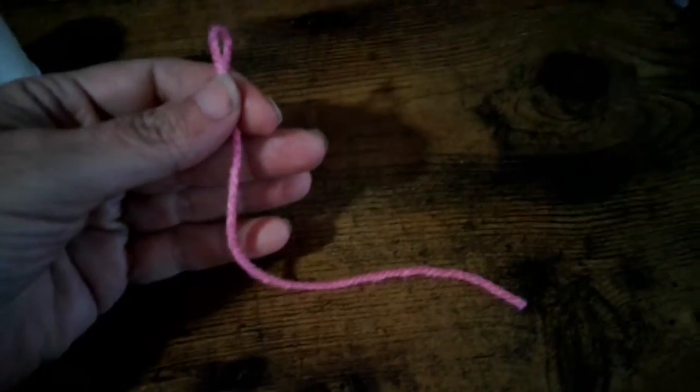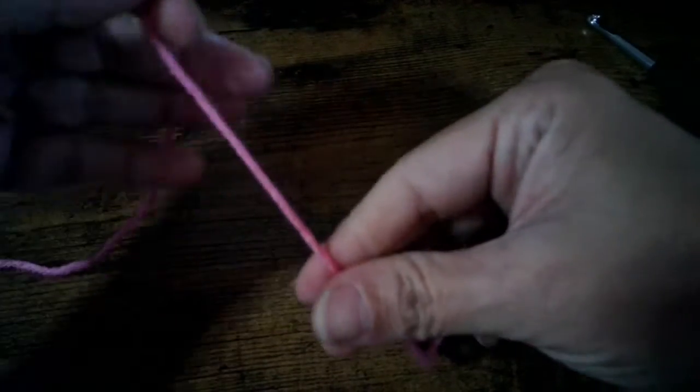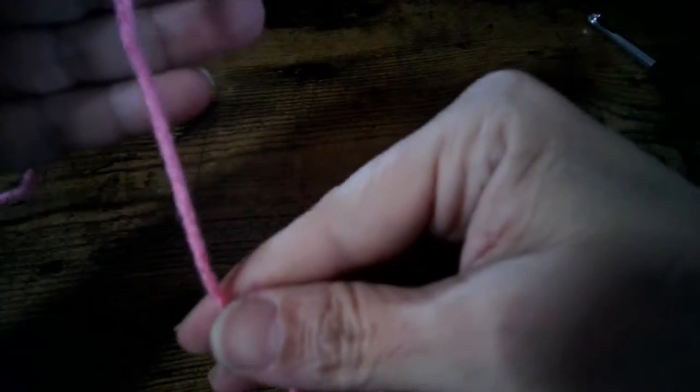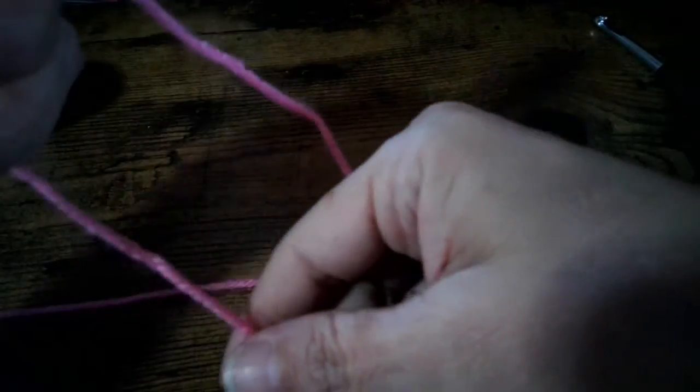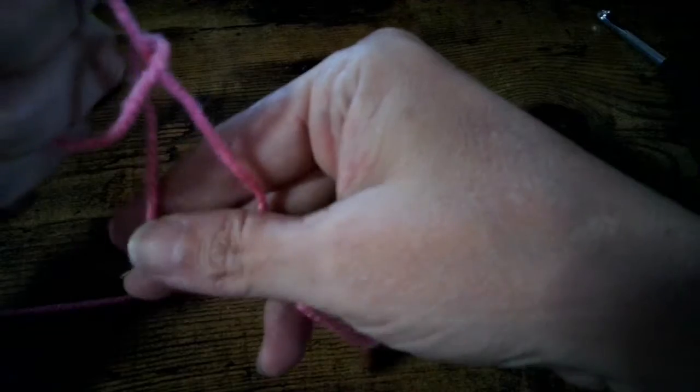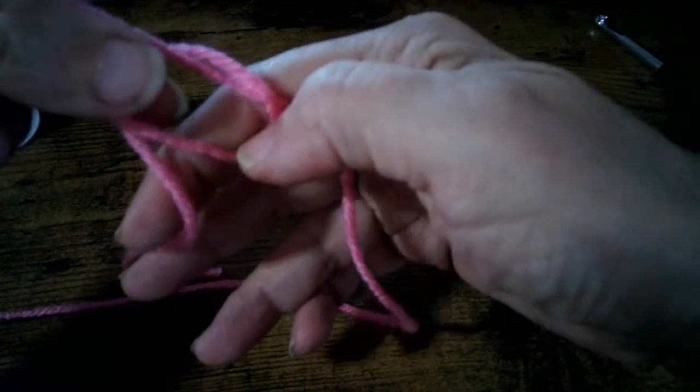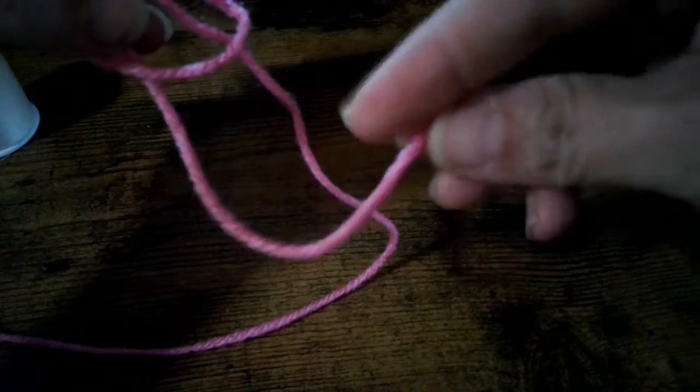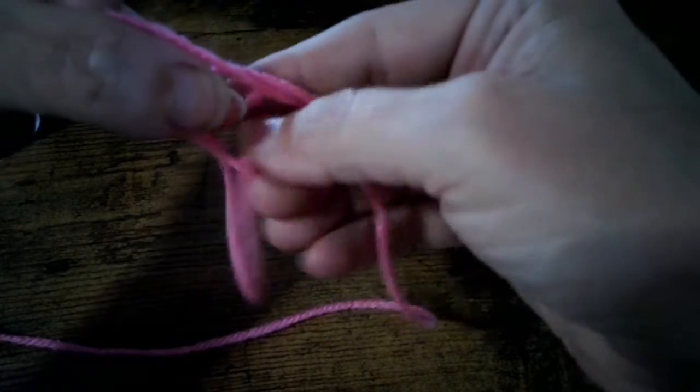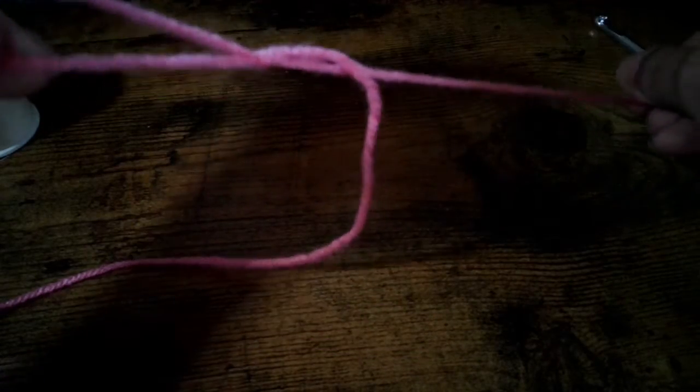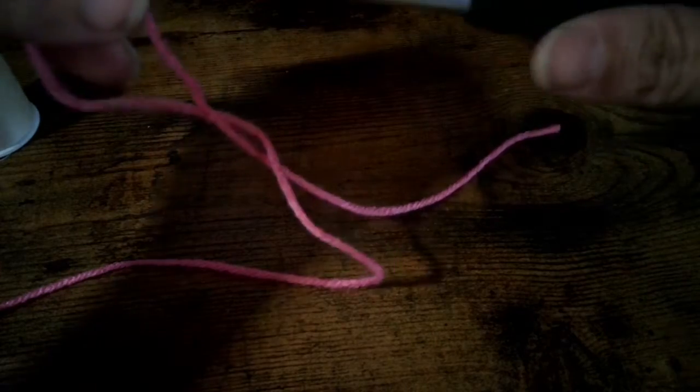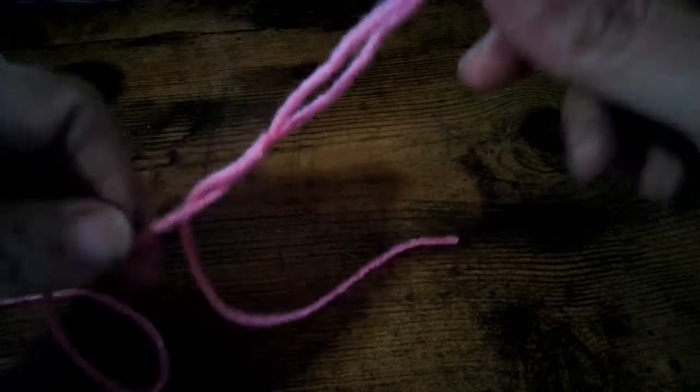What you want to do is take your yarn and lay it over your hand like this, over your fingers. Get both strands over here. Now take it and put it over this strand, wrap it around like so. You put the yarn through this hole and pull it tight. You put the loop on your hook, and this is where you adjust.